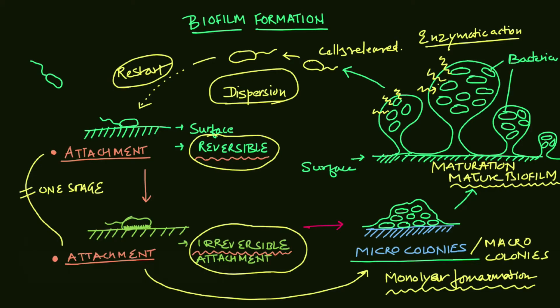In this video we have discussed the different stages of biofilm formation: the stage of reversible attachment, the stage of irreversible attachment, micro colony formation, the three-dimensional mature biofilm stage, and the stage of dispersion where bacteria detach from the biofilm and restart the process of biofilm formation.